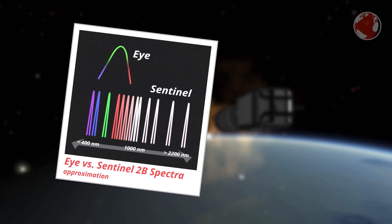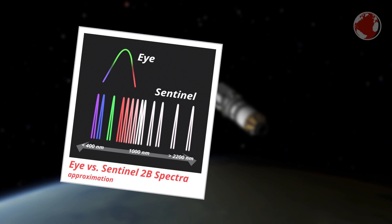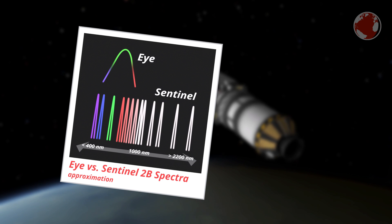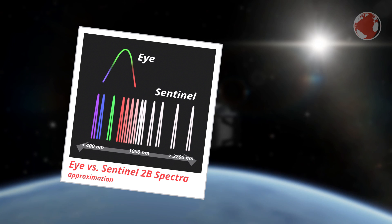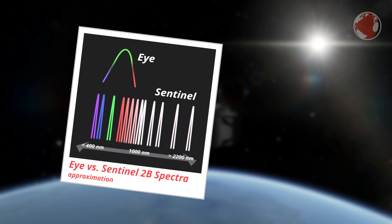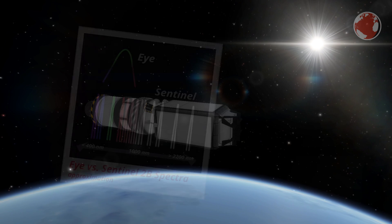Here's a little comparison between our eyes and Sentinel. Every bump is a distinct sensor which sensitivity peaks at a certain wavelength. The images of the blue, green, and red sensors can of course be combined to get a normal color picture.